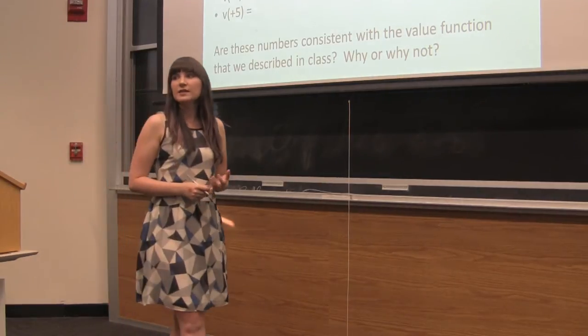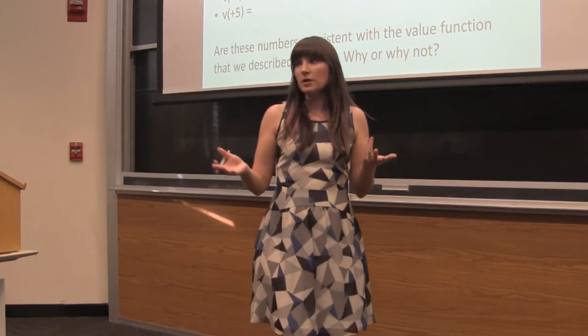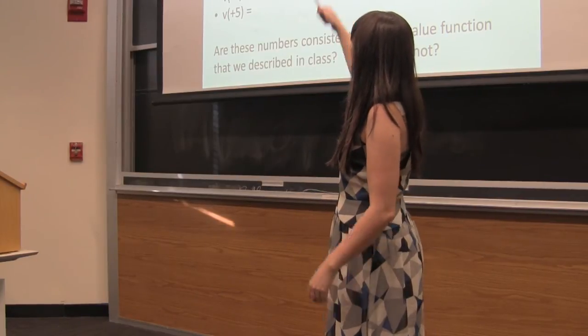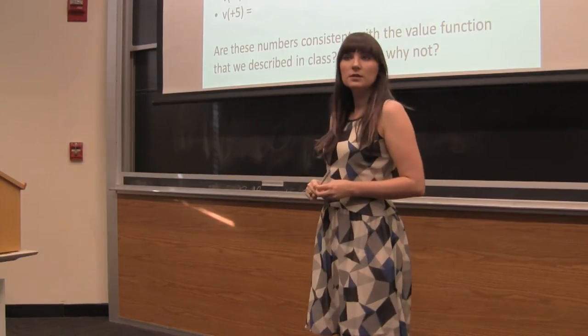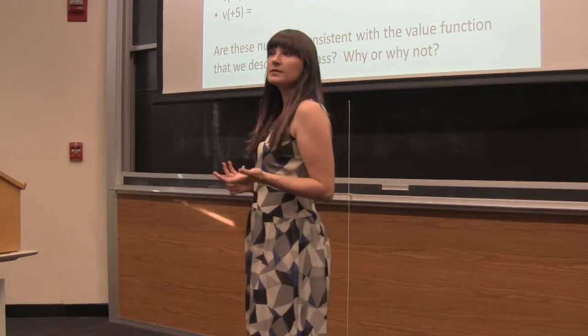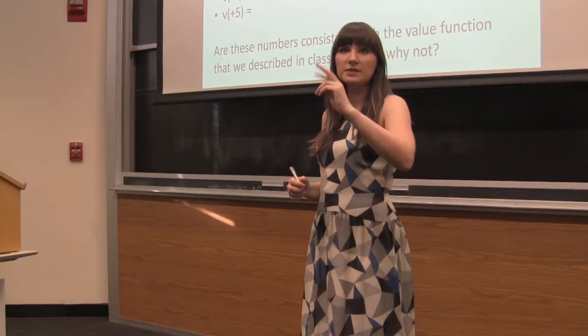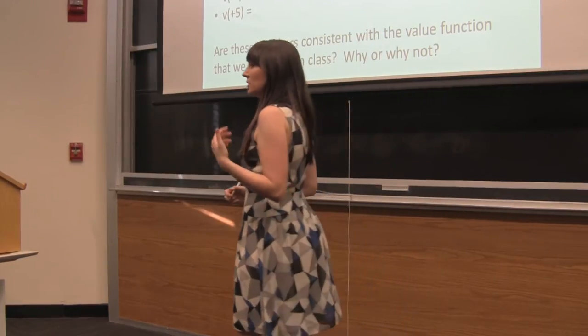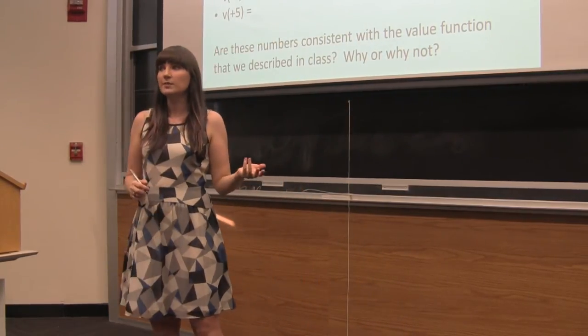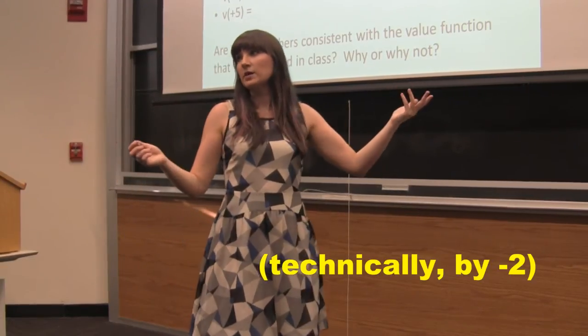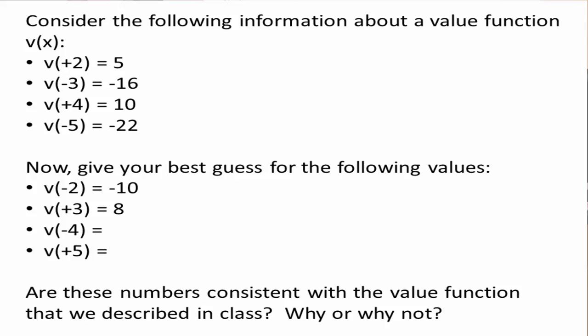We can apply that same logic to get the rest of the numbers, right? So if the value of a loss of 3 is negative 16, then we can guess that the value of a gain of 3 is what? Yeah, we're just going in the opposite direction, right? That if when we're going from gains to losses, we're multiplying by 2, when we're going from losses to gains, we're just dividing by 2, obviously. And changing the pluses to minuses, and vice versa.